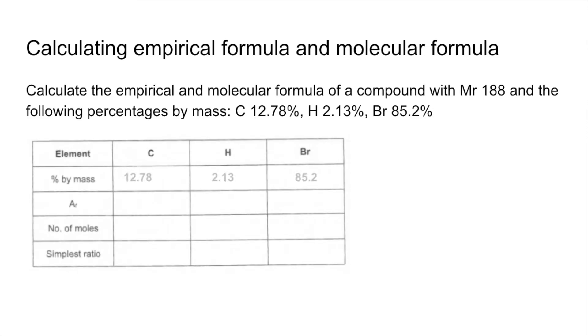So there's the table, there's the percentages, there's the relative atomic masses. Divide the mass by the relative atomic mass gets us the moles. Divide by the smallest, so we get those numbers there.